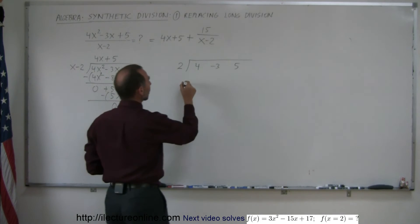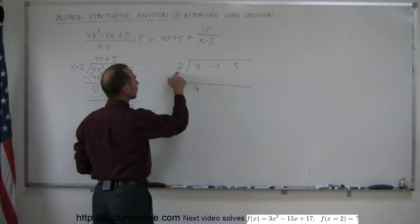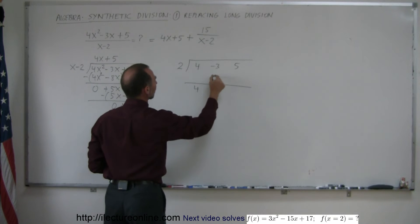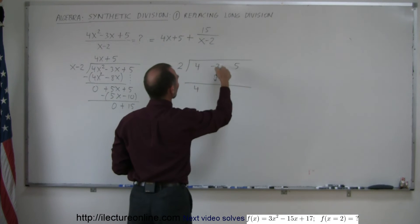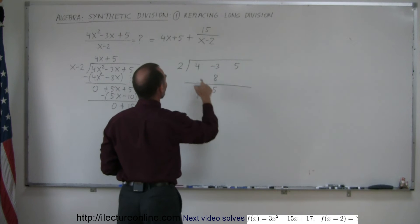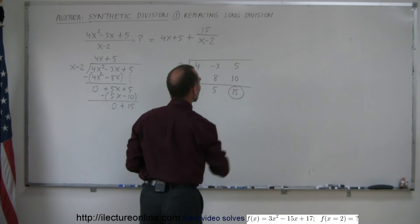Next, what we do is put a line here. We drop the 4 down here. And now we go 4 times 2, which is 8. And then we add these together. And so 8 plus minus 3 is a positive 5. Then we multiply 5 times 2. We get 10. Then we add these two together. And we get 15. And there's your remainder.